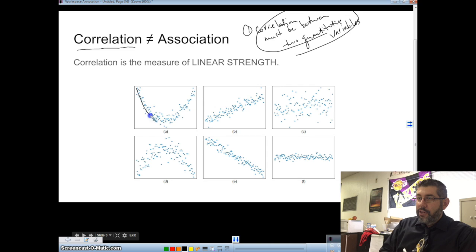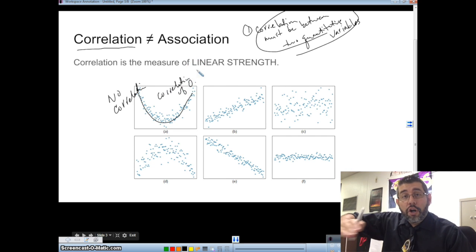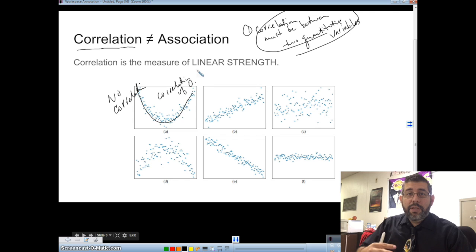This is probably the most thing that people mess up when they talk about correlation. They say there's a correlation between the type of pet you own and how many hours you work. Well no, there isn't. There can't be a correlation between those two because one of them, type of dog, is categorical and the other, hours you work, is quantitative. You cannot have a correlation between the two. You can have an association between the two, but you cannot have a correlation because correlation is a measure of linear strength between two quantitative variables.